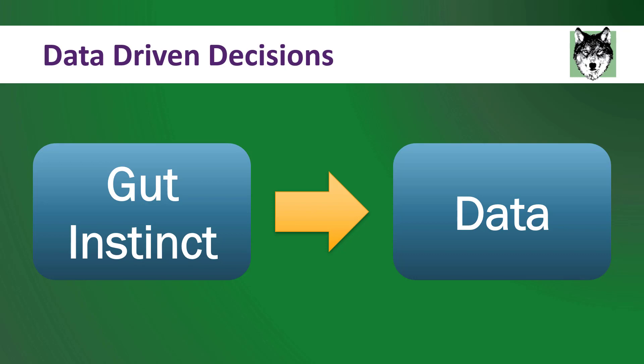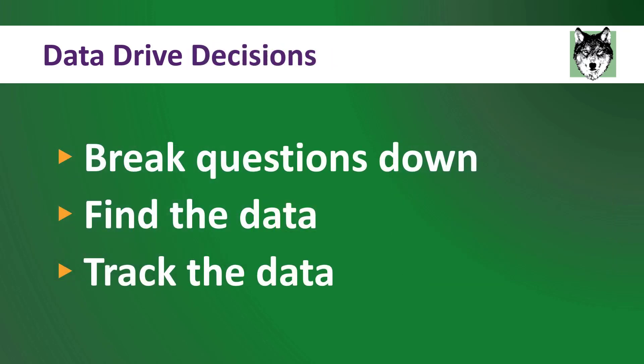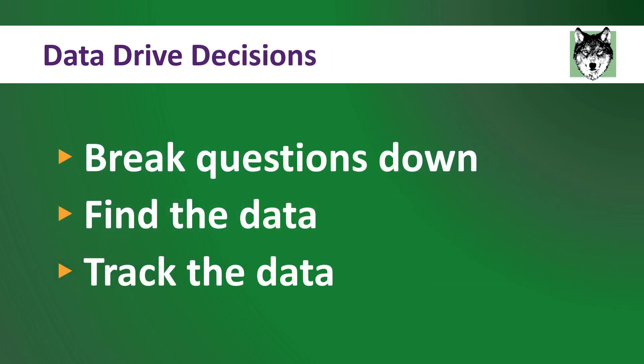Let's look at the next question: should I purchase new equipment? We can use the same process — break questions down, find the data, and track the data. There are a lot of capital expenditure analysis spreadsheets available with different methods to calculate ROI, or return on investment, for equipment. But the goal is all the same: take these complex business decisions, put them into an Excel spreadsheet with your data, and let that guide your decision.